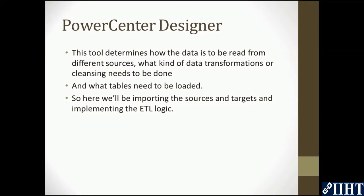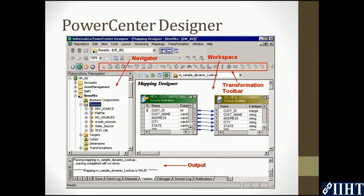Once you log in to the designer, we will come across a screen like this. You can see the navigator pane on the left side of the screen. This displays the folder structure of your repository that you're connected to. Within each folder, you can see the targets, sources, mapping transformations, and maplets of that repository.